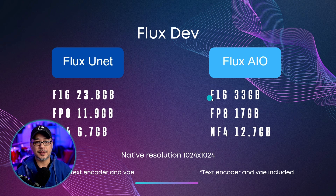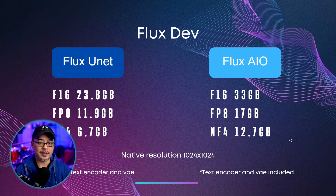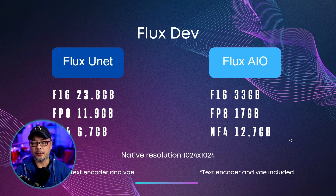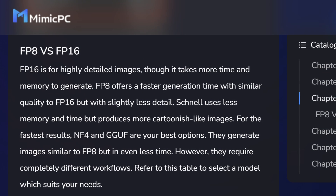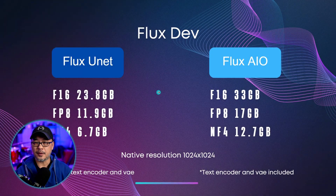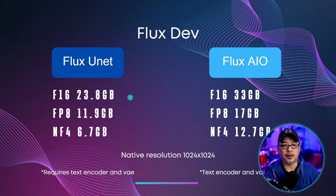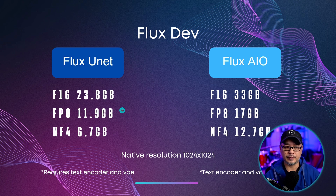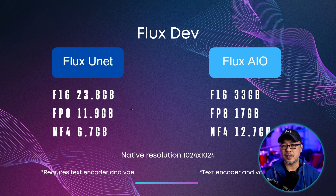If we take a look at the right side of the slide, we see the F16 at 33 gigabytes, FP8 at 17, and NF4 at 12.7 — this is including the text encoder and VAE. You might be wondering: what is F16, FP8, and NF4? These are ways to optimize the model. Number one, we can decrease the file size. The original Flux unit model at F16 is just under 24 gigabytes, FP8 is practically half at almost 12 gigabytes, and NF4 at six. The one advantage is having smaller file sizes, but it comes at a cost in terms of loss of quality. These optimization methods have to do with the accuracy of the detail and information within the model.